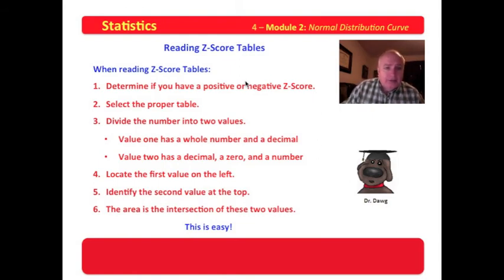Determine if you have a positive or a negative z-score, because that determines the table that you're going to use. And you select the proper table to divide the number into two values.